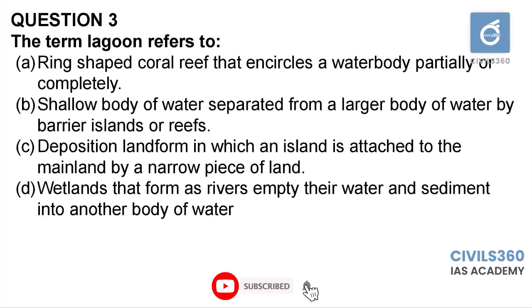The statements given here are definitions of depositional features found in and around river bodies. An atoll is the ring-shaped coral reef including a coral rim that encircles a lagoon partially or completely. The shallow body of water separated from a larger body of water by barrier islands or reefs is called a lagoon. A tombolo is a depositional landform in which an island is attached to the mainland by a narrow piece of land, like a spit or bar. A river delta is the landform created by deposition of sediment carried by a river as the flow leaves its mouth. Therefore the answer is B.